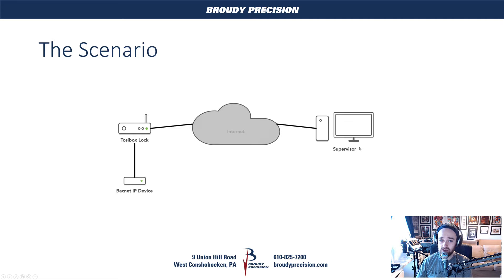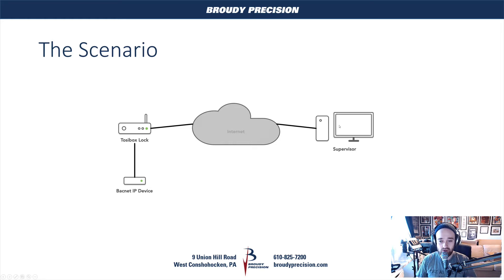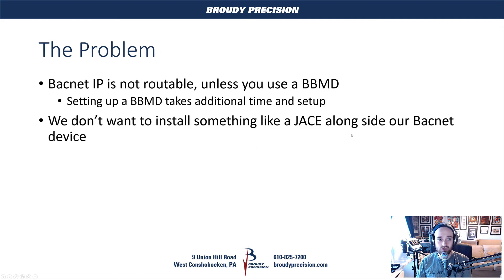If we take a look at what the scenario is, you can see we've got this BACnet IP device out here in this remote site, and we've got a TaziBox lock that it is connected to, and they're both out on the internet through that lock. Then we have a remote supervisor. What we want to do is take that supervisor and connect to the BACnet IP device, pull in our points, and be able to discover and do all the things that we would ordinarily be able to do if they were on the same physical subnet.